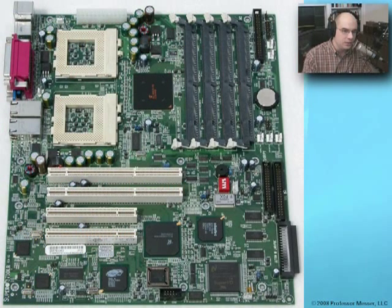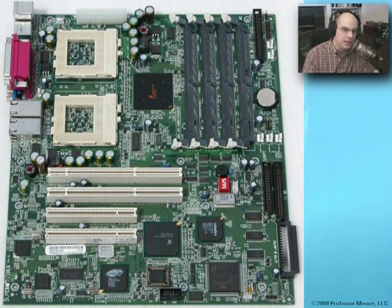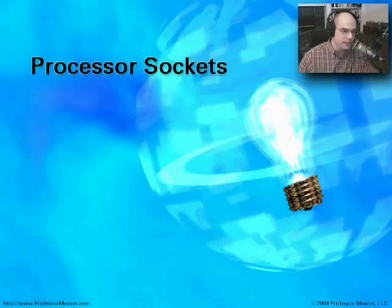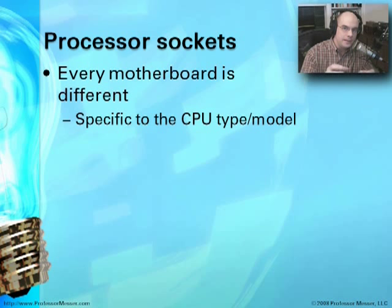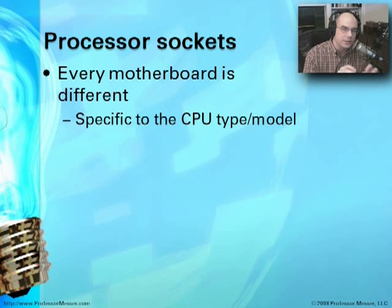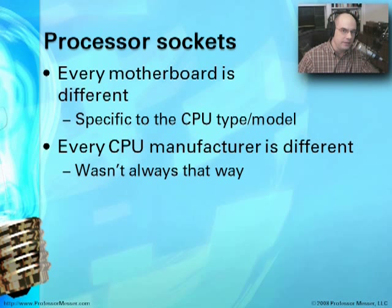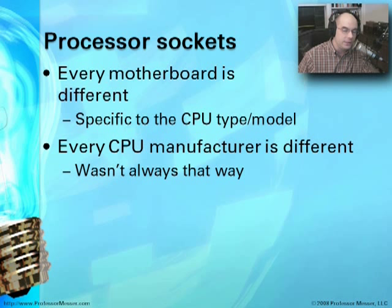Here's an example of a motherboard I have in my lab. This one has multiple CPUs and different components, and we'll step through it to understand everything on this system. Processor sockets are a little bit different from motherboard to motherboard — the motherboard is expecting a certain type of CPU in a certain type of socket. Everything must match. Intel CPUs and AMD CPUs are different types that go in different types of motherboards.